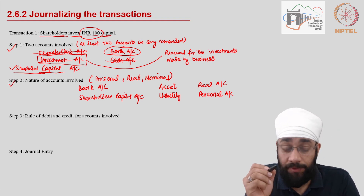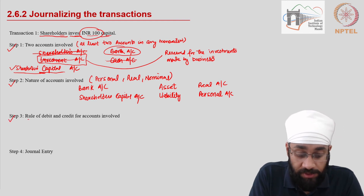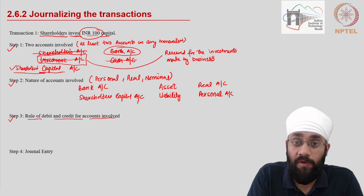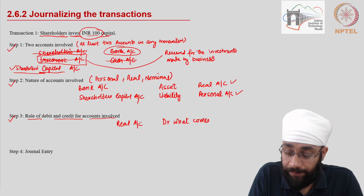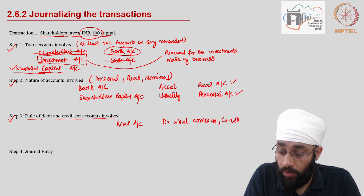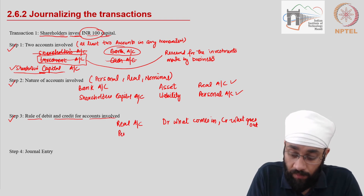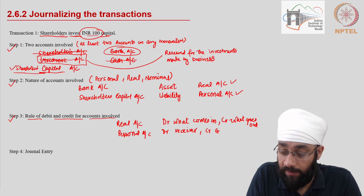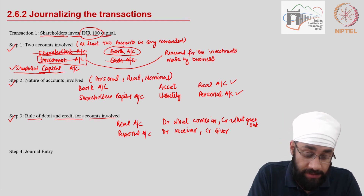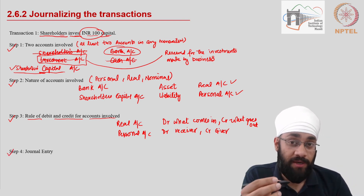Step two is done. Let us now go to step three. Step three asks: what is the rule of debit and credit for the accounts involved? The two accounts involved are real and personal. For a real account, the rule is: debit what comes in, and credit what goes out. For a personal account, the rule is: debit the receiver and credit the giver. Step three is done.